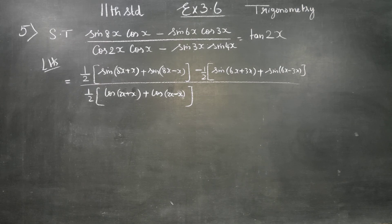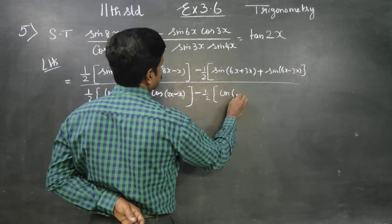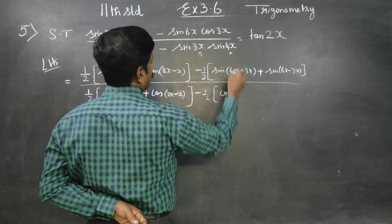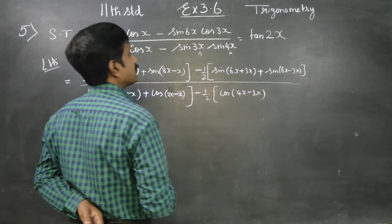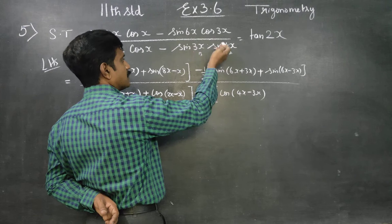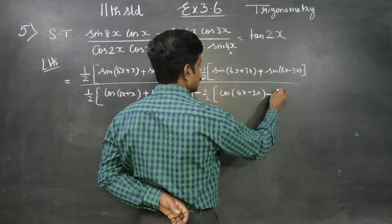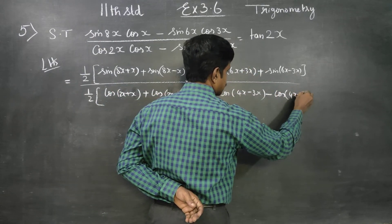Use cos(a-b): cos(a-b) gives 1 by 2. Now a minus b is 4x minus 3x, and a plus b is 4x plus 3x. So cos(a-b) minus cos(a+b), where a plus b is 4x plus 3x and a minus b is 4x minus 3x.